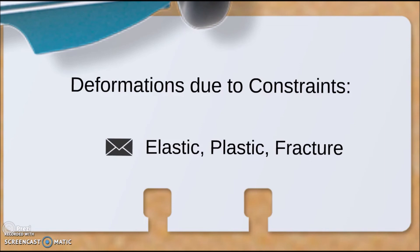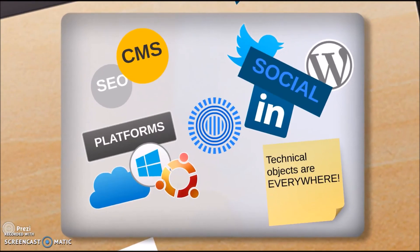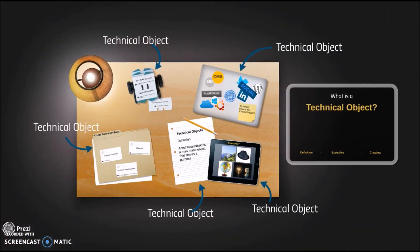Technical objects are everywhere. If you're holding or using anything that is not naturally found in nature, but uses the resources on this beautiful planet, then it's a technical object. Technical objects can be as simple as paper to as complicated as a machine. And that's it for technical objects. See you next time.